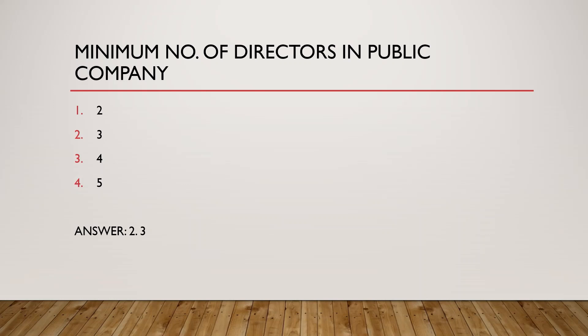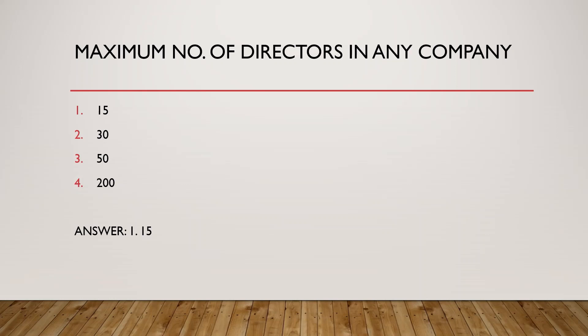Question: Minimum number of directors in a public company. As a note — in a private company, the minimum is two directors and the maximum is 15; in a public company, the minimum is three and the maximum is 15. So in a public company, minimum three directors are required to incorporate the company — answer is three. The next question asks for the maximum number of directors in any company. The maximum is fixed at 15 for both types, so the answer is 15.